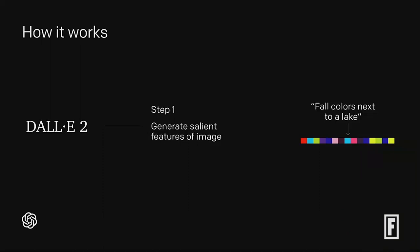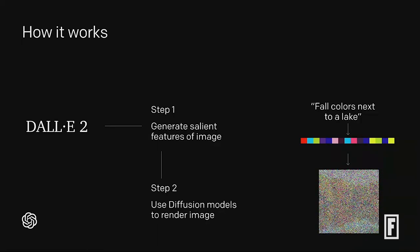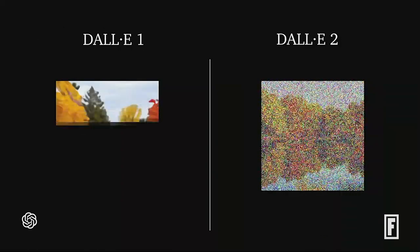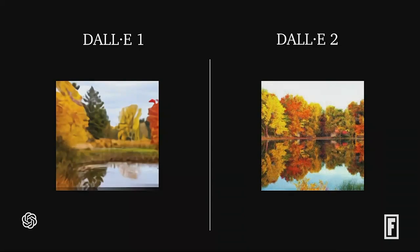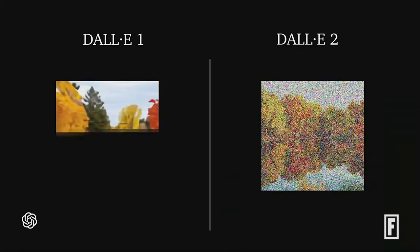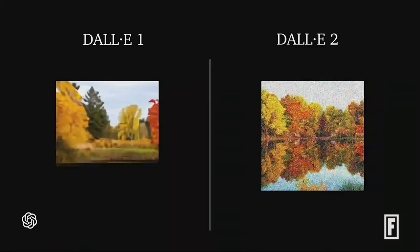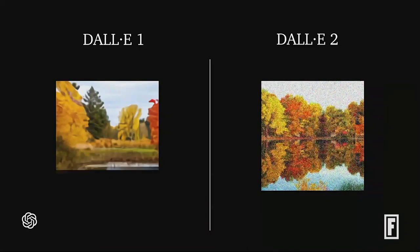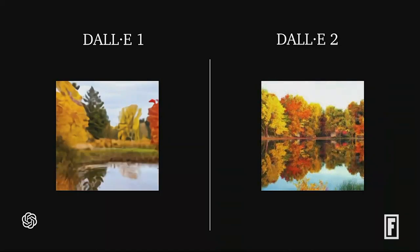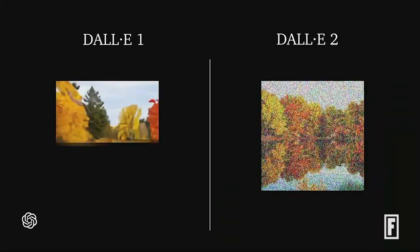In order to generate a new image, the model takes the prompt — say, 'fall colors next to a lake' — and turns it into its internal representation. Then it uses what's called a diffusion model to render it into a highly realistic image. If you've been following our work since DALL-E 1, that used a technology more similar to GPT-3, generating the image row by row. In contrast, what powers DALL-E 2 is a diffusion model. You can see a visualization in this slide — the image starts out as very grainy, noisy texture, and over the course of generation, it resolves into something crisp and sharp.